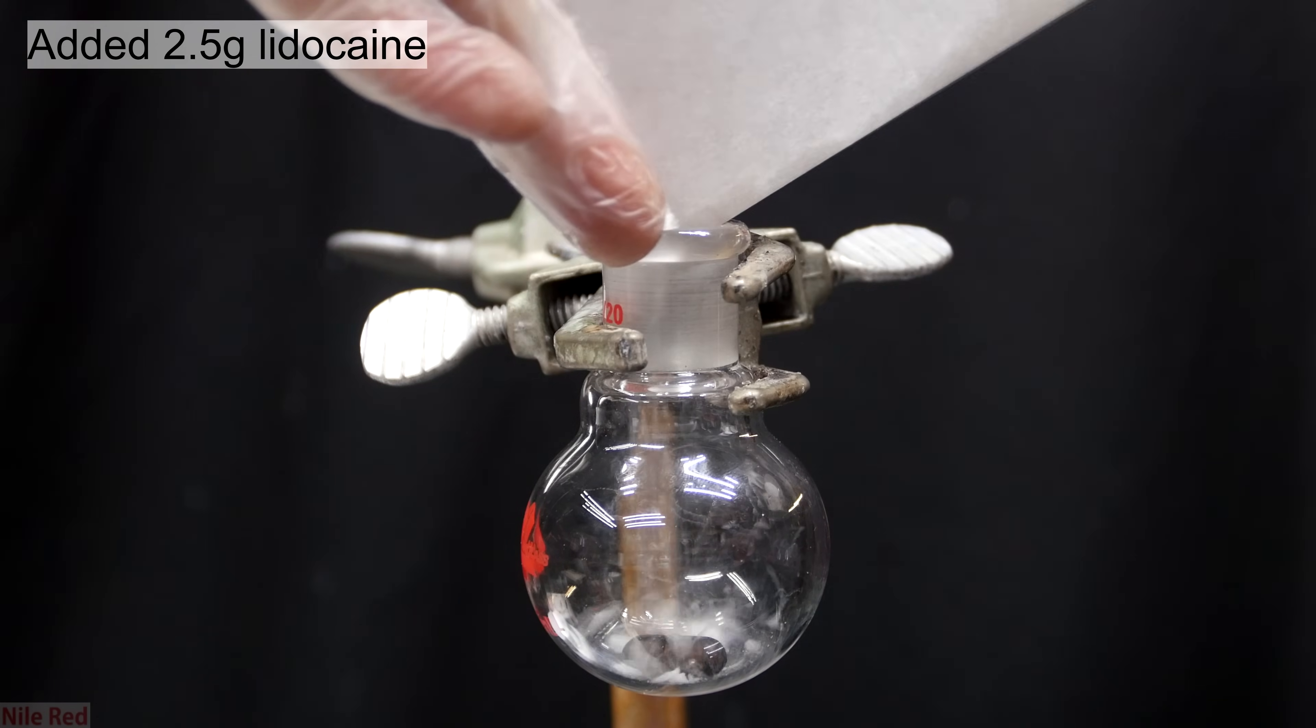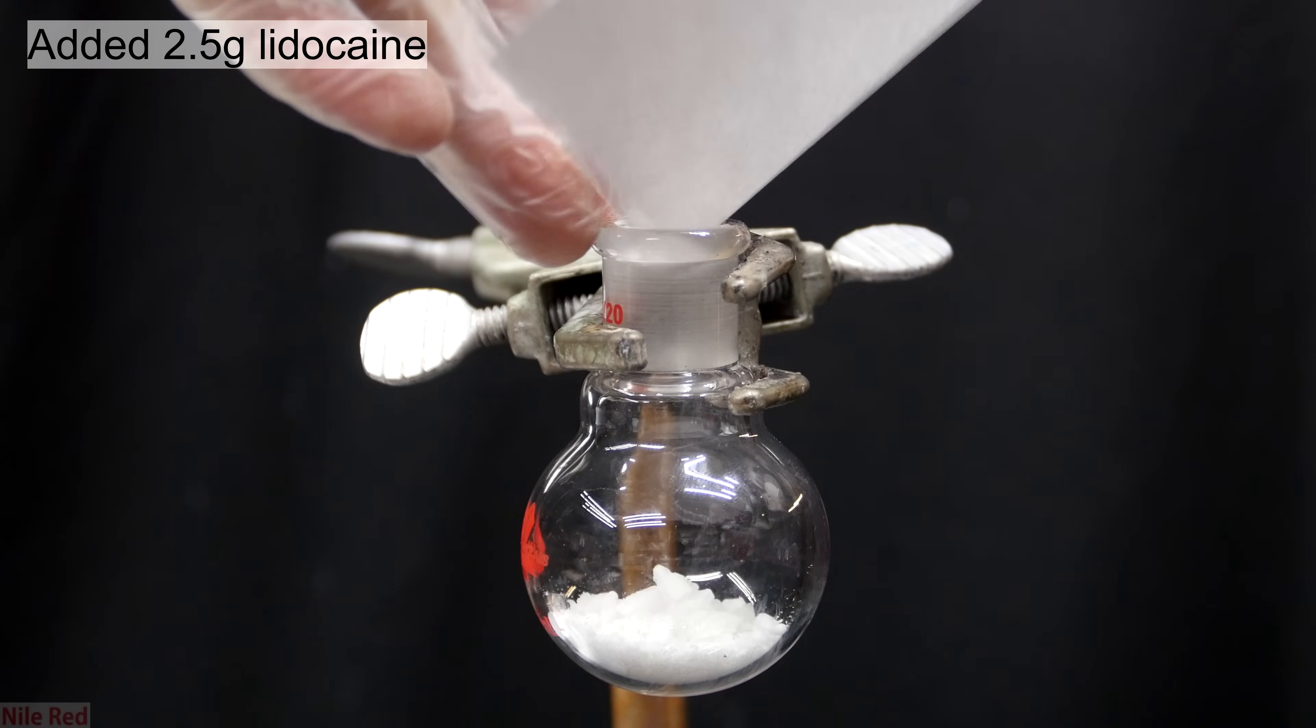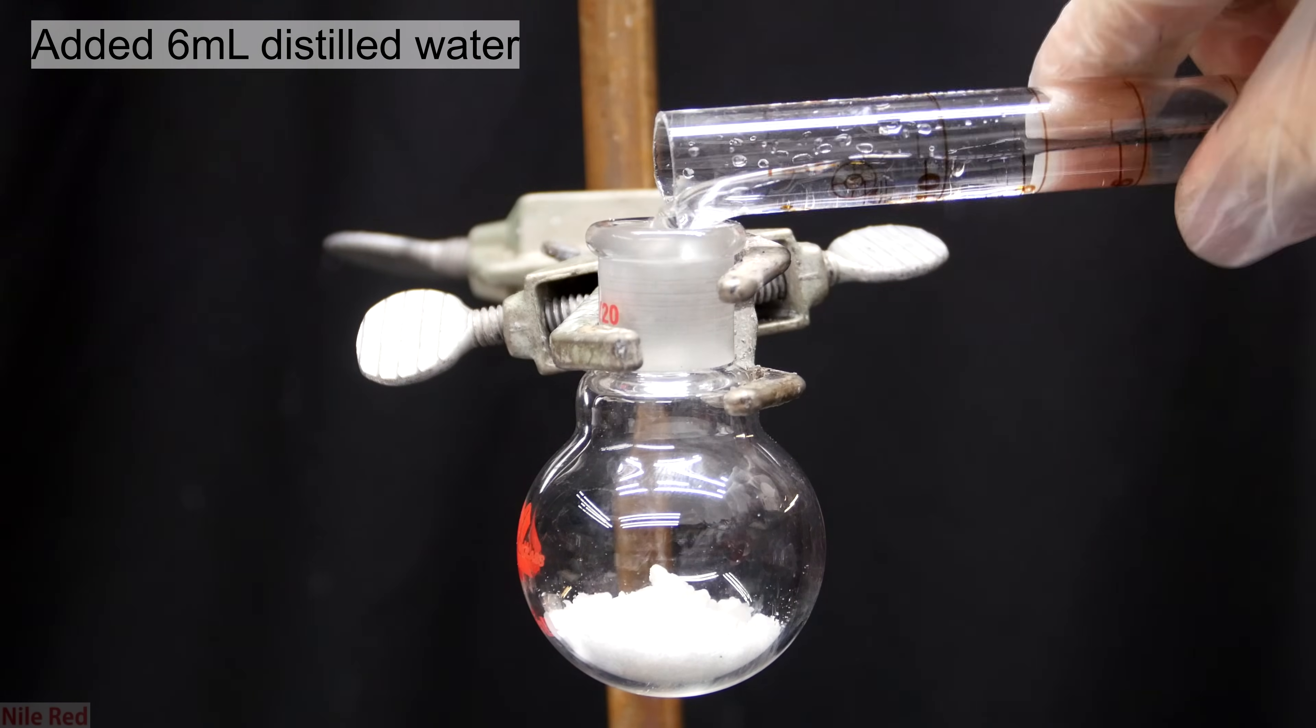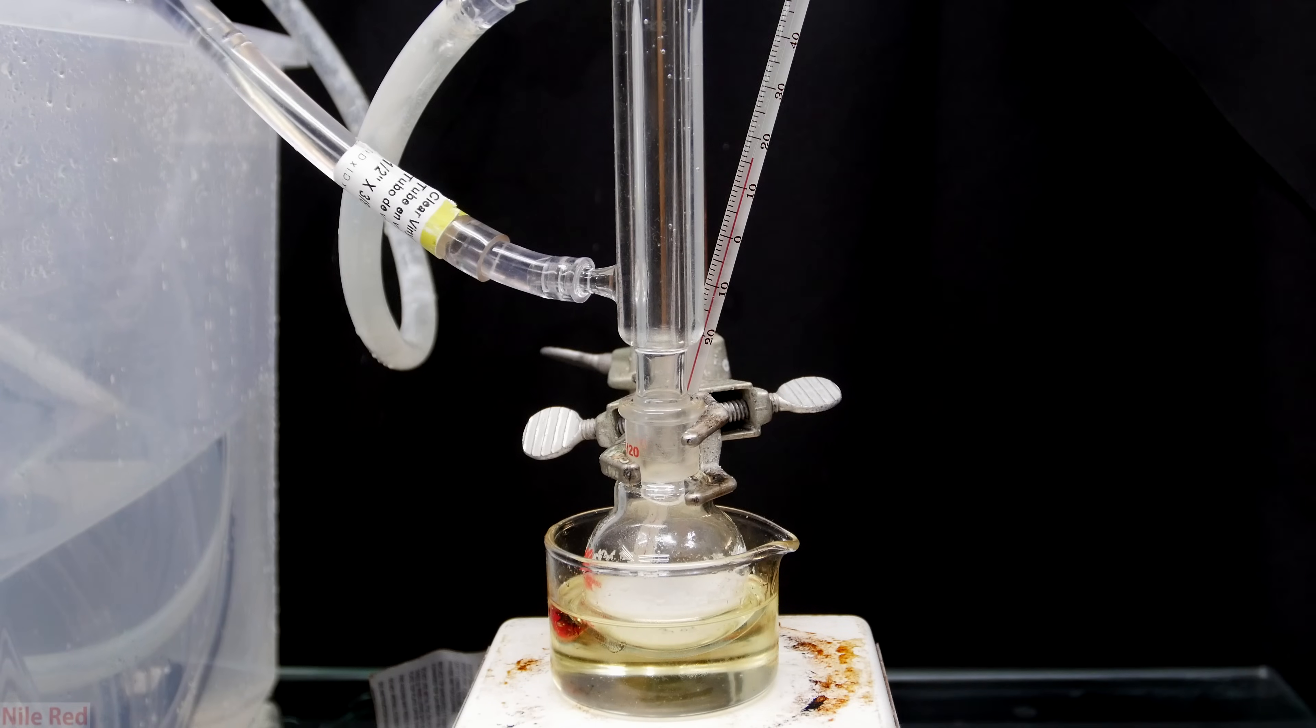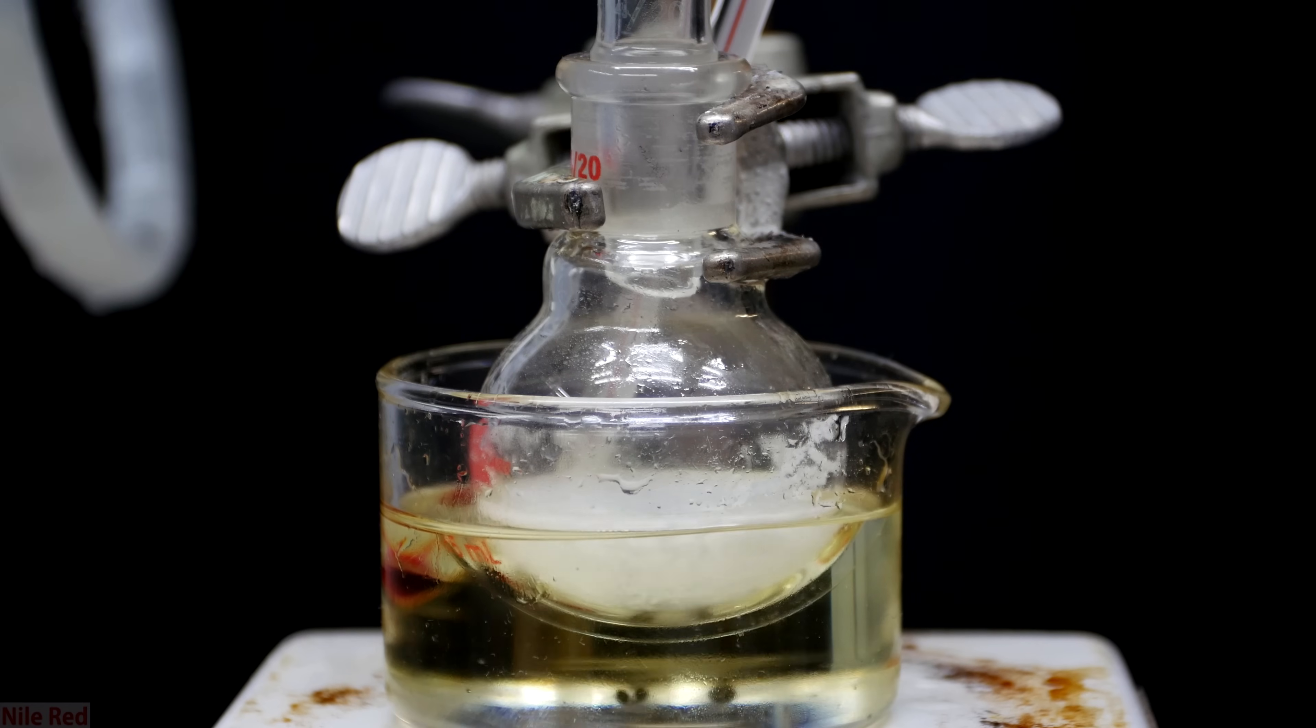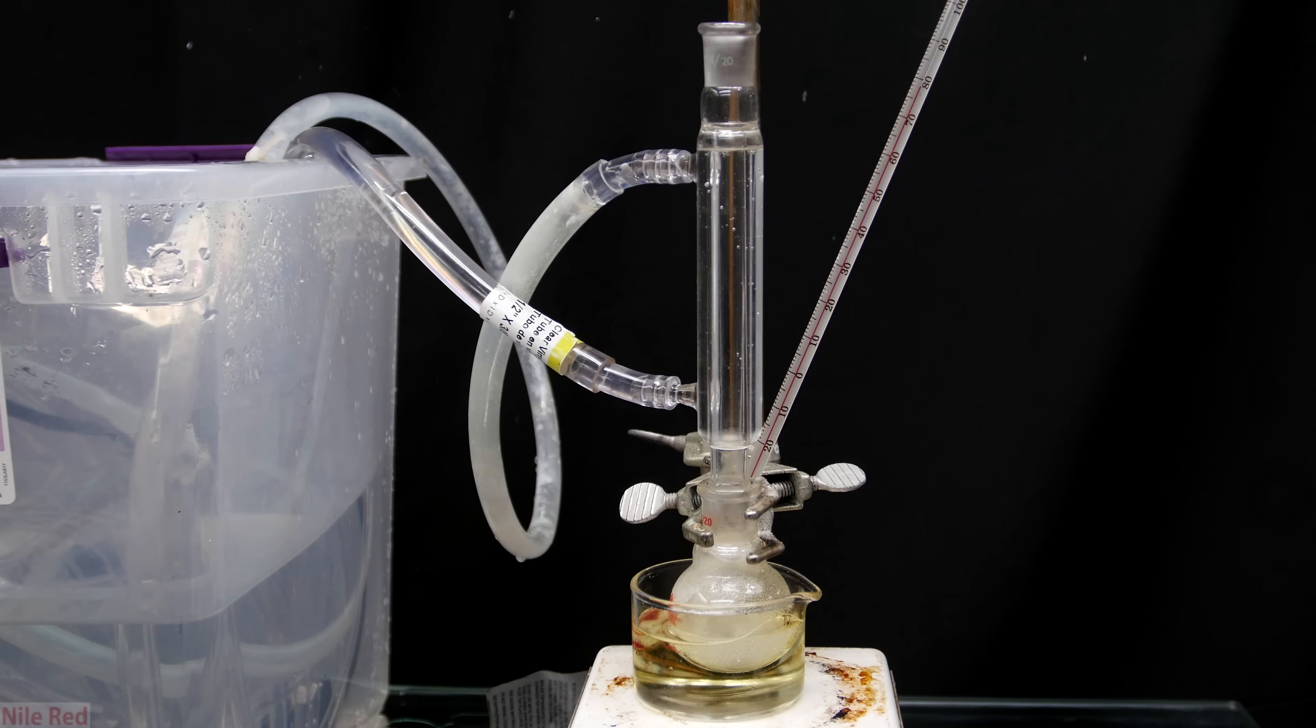To start off, I added 2.5 grams of lidocaine to a 25 milliliter round bottom flask. On top of this I poured in about 6 milliliters of distilled water. I then set up an oil bath with a cold water condenser on top and with a thermometer in the oil. I turn on the hot plate and start the stirring as well. The cold water condenser above should recondense any water that evaporates off. The goal here is to heat the mixture to about 80 degrees celsius.